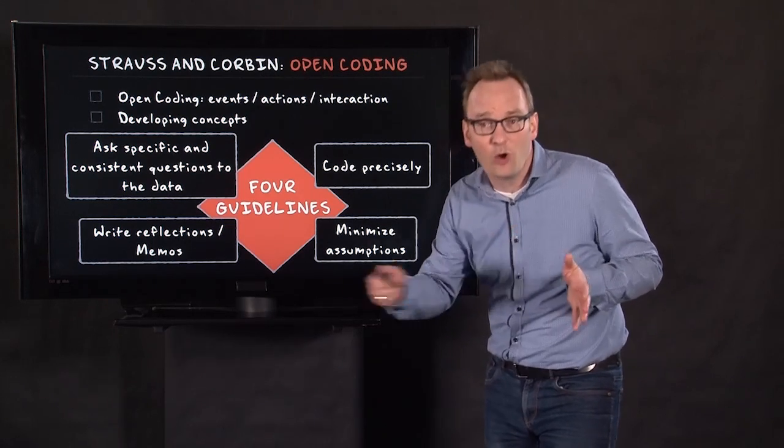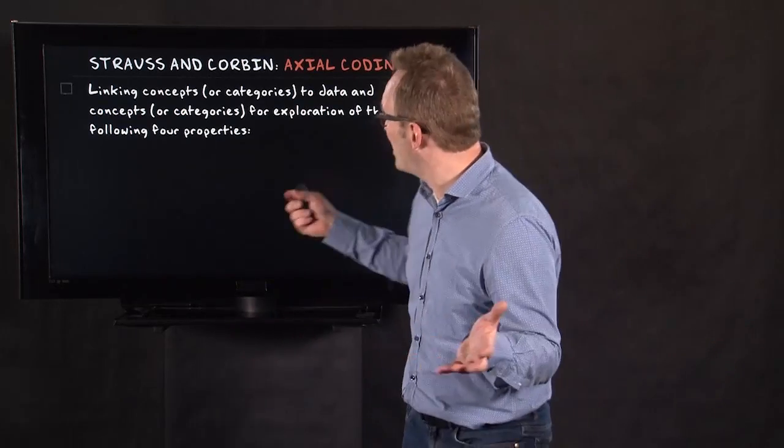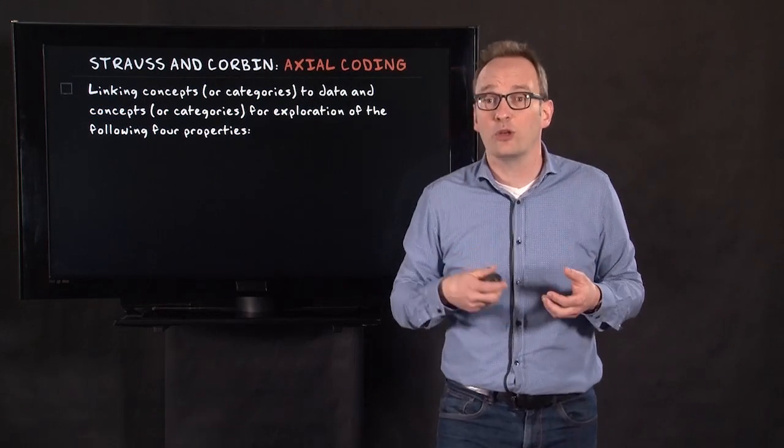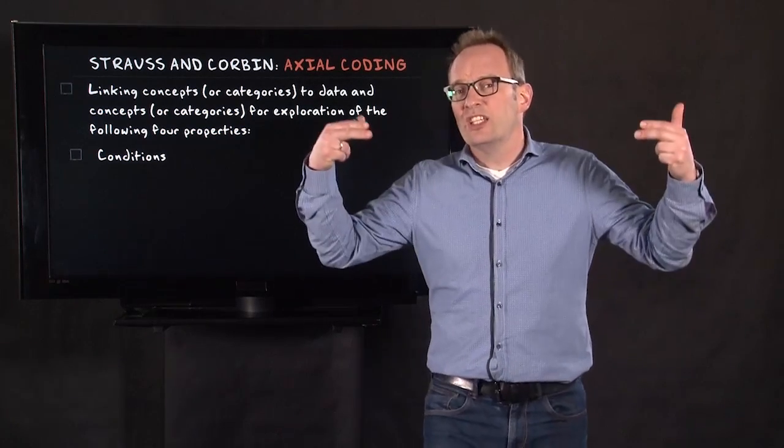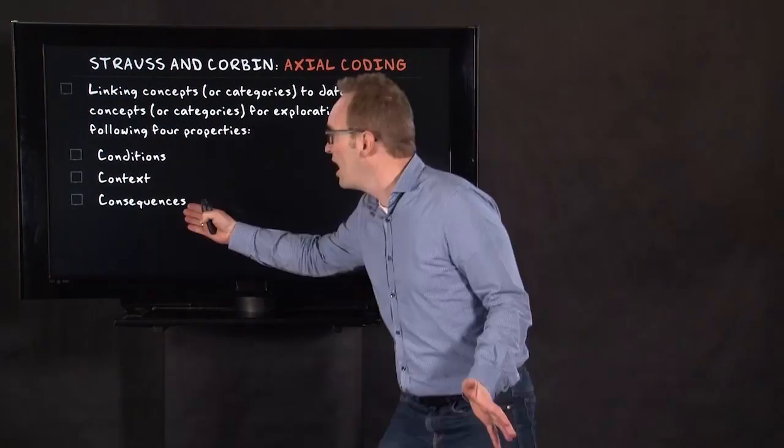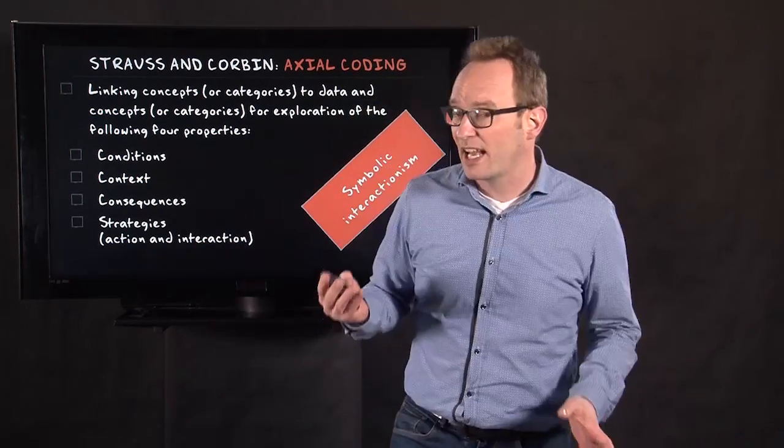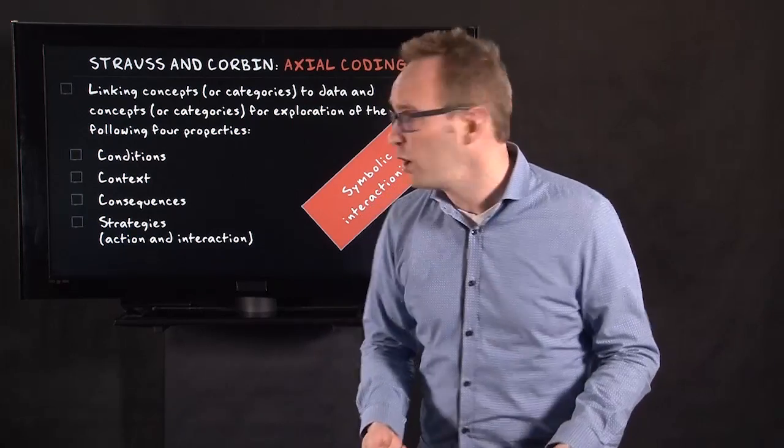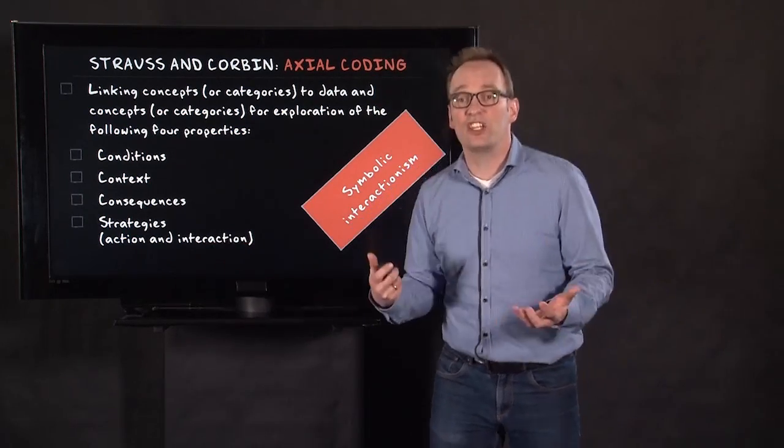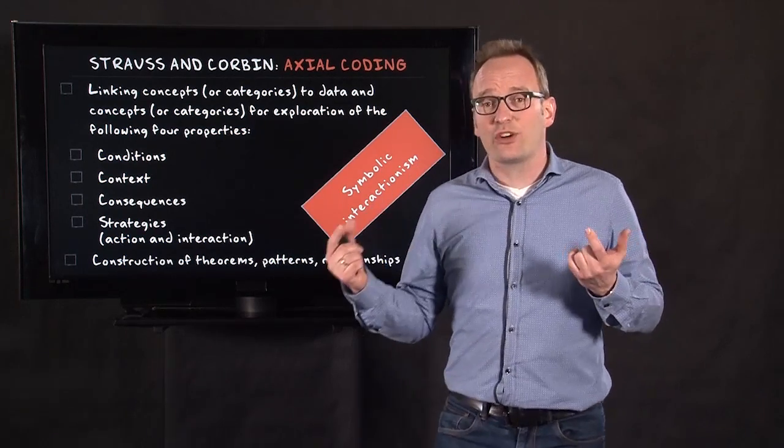So when you've done all this coding, you reach a certain point where you have so many open codes you need to organize them. You organize them into categories. Then you try to link these categories to each other but also to four specific properties. These properties are conditions—in what conditions does this behavior occur? In what context does this behavior occur? What are the consequences of a certain type of behavior? And what strategies are behind it? What action and interaction strategies can I see in this? And here again you see a very clear mark of symbolic interactionism on this methodology. Action and interaction strategies—symbols people use also in interactions.